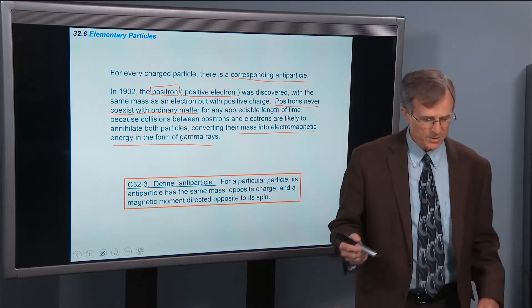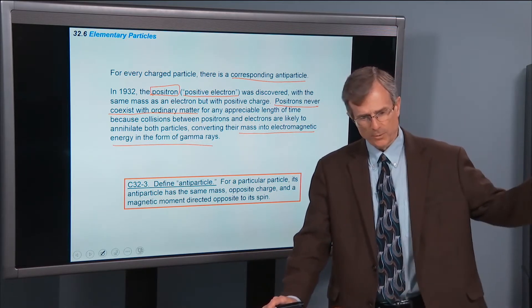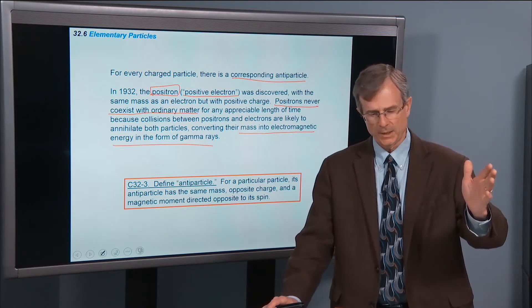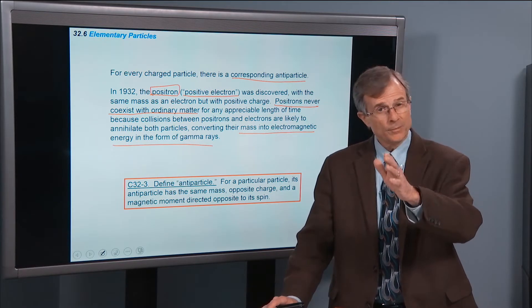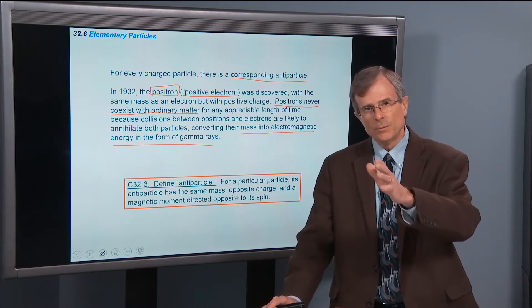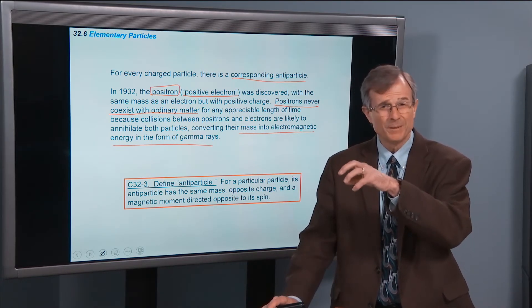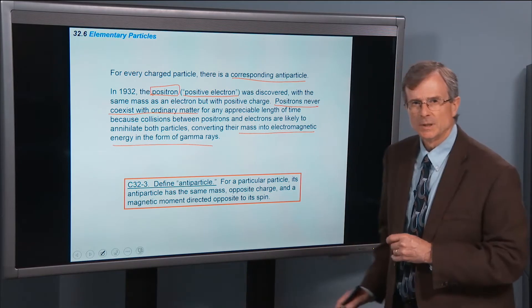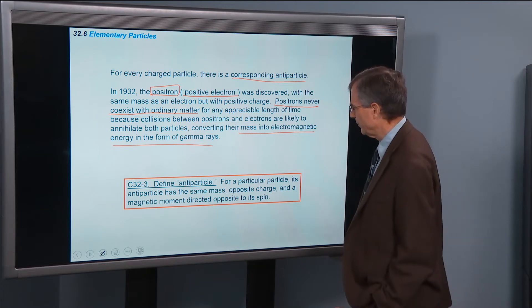The energy of that annihilation process comes out in the form of gamma rays. You'll remember from our discussion of electromagnetic radiation that we've got the radio, we've got the infrared, we've got visible, we've got ultraviolet, we've got X-rays, and gamma rays.